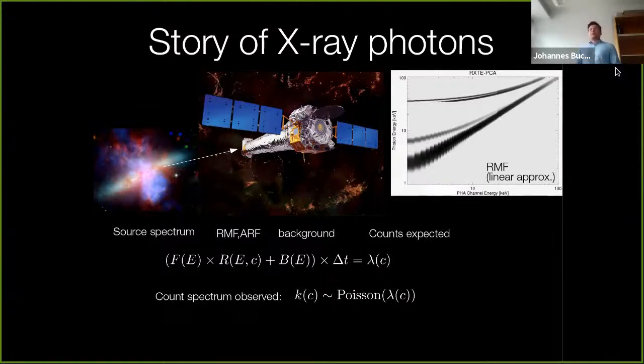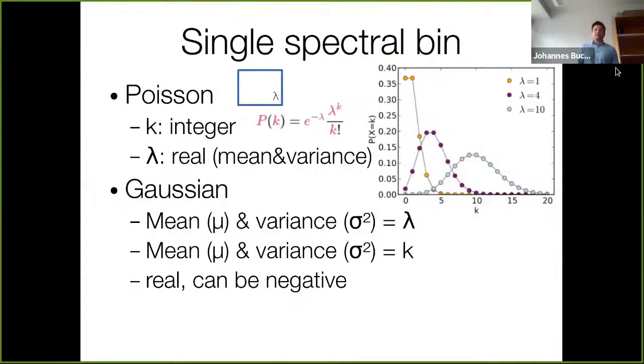We can model this whole procedure by projecting through a response matrix. One example is shown on the top right here. You see it's not a diagonal matrix, so we cannot invert this process to infer the source spectrum. We have to forward fold to estimate the counts expected on the detector. So if we do this linear approximation, you assume some source spectrum, you assume you know your instrument, you have some background emission coming in.